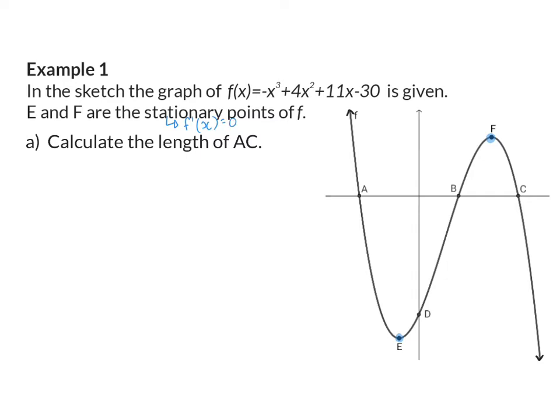On the sketch we also have coordinates A, B and C, which are the x-intercepts of this graph, and x-intercepts are determined by taking the original function and putting it equal to zero. There's also a y-intercept indicated at coordinate D, and the y-intercept can be read from the equation as the constant value, so this coordinate will be (0, -30).